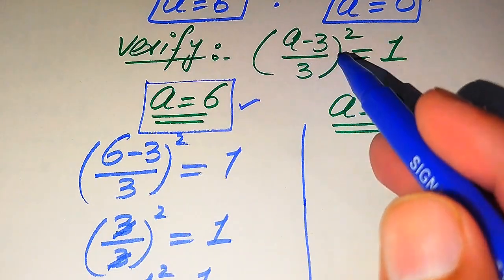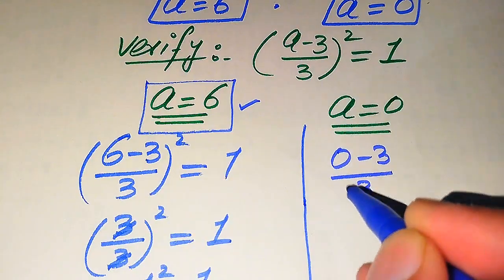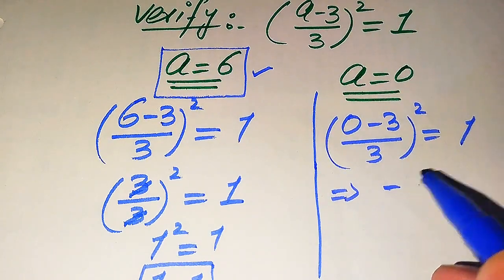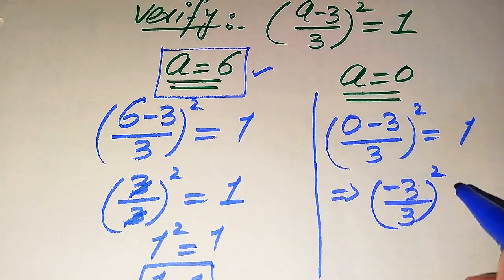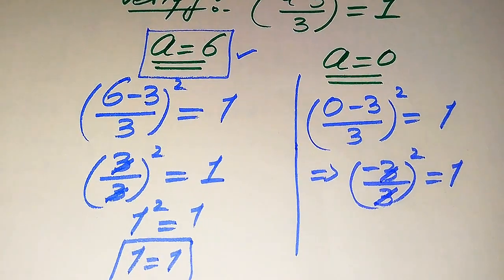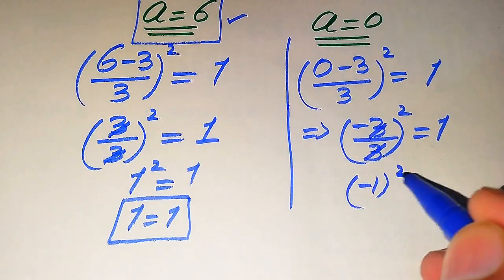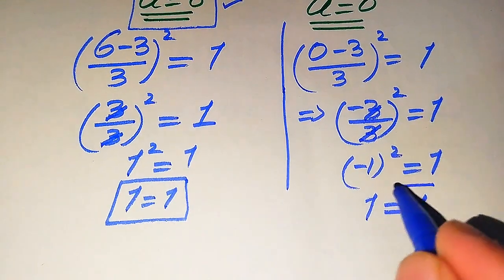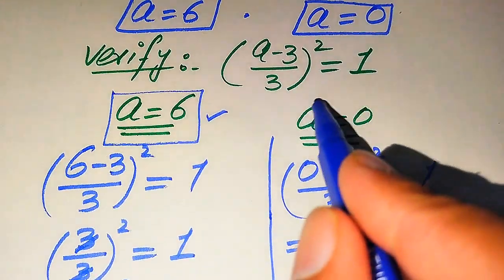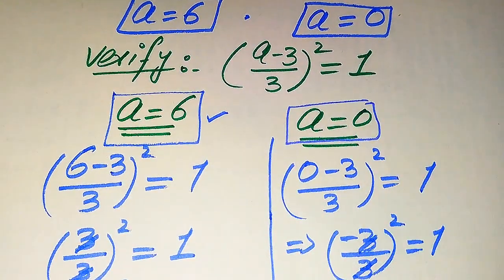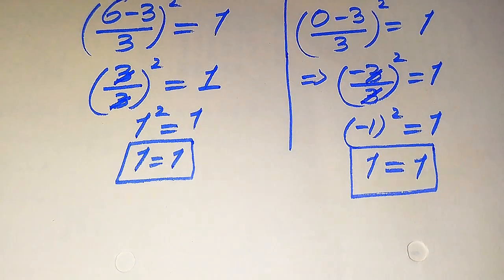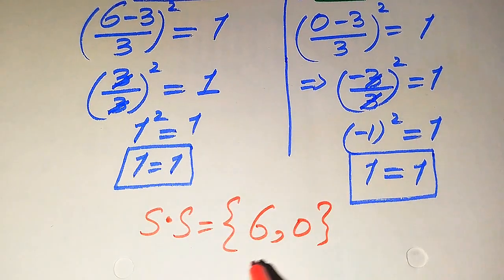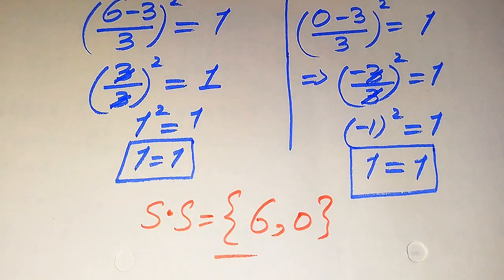Now substituting a equals 0: (0 minus 3) divided by 3, whole squared equals 1. We get (minus 3) divided by 3, whole squared, which gives (minus 1) squared equals 1. Since minus 1 squared equals positive 1, both sides are equal, so a equals 0 also satisfies the equation. Therefore the solution set from Method 1 is {0, 6}.